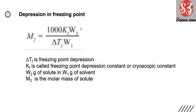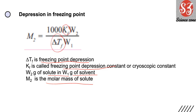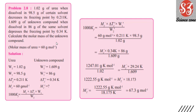Next is depression in freezing point. To find molecular mass: M2 = 1000·Kf·W2 / (ΔTf·W1), where Kf is freezing point depression constant, ΔTf is freezing point depression, W2 is weight of solute, W1 is weight of solvent. If you see Kf and ΔTf in a problem, it is definitely a freezing point depression question.